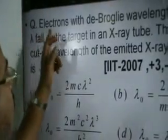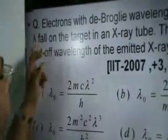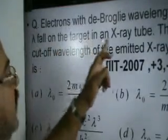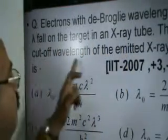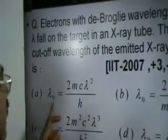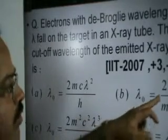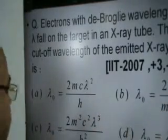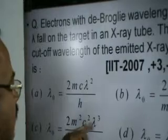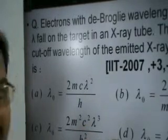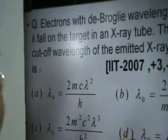The problem: electrons with de Broglie wavelength lambda fall on the target in an X-ray tube. The cutoff wavelength of the emitted X-ray is to be found. The options are: (a) λ₀ = 2mcλ²/h, (b) λ₀ = 2h/mc, (c) λ₀ = 2m²c²λ³/h², and (d) λ₀ = λ. Let us solve this problem.